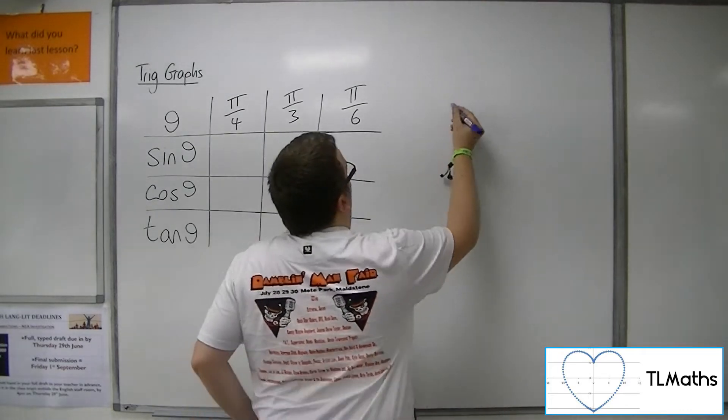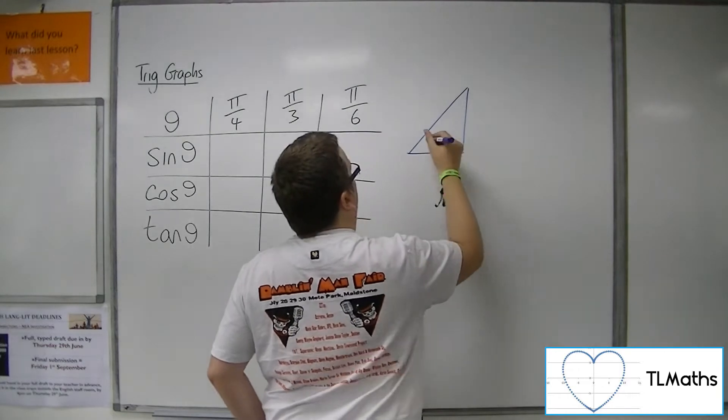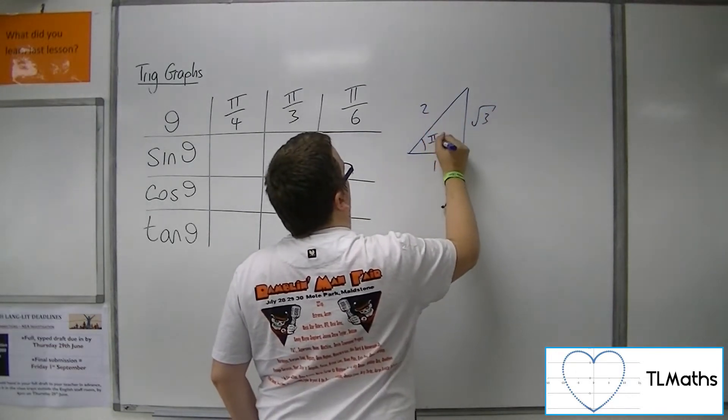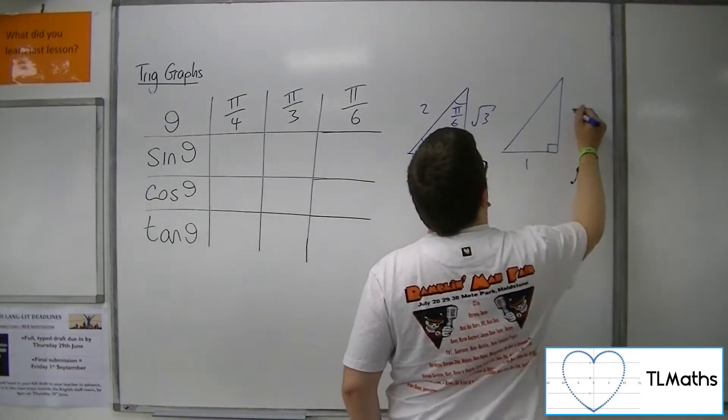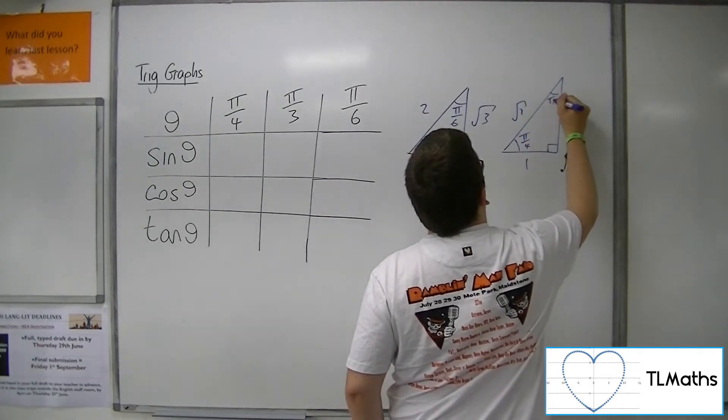So we're going to quickly draw the two triangles, two right-angled triangles. So we've got 1, 2, root 3, pi over 3, pi over 6. And 1, 1, root 2, pi over 4, pi over 4.